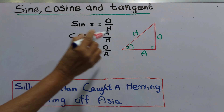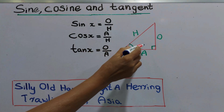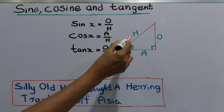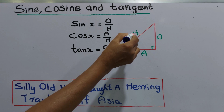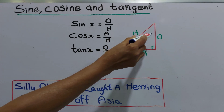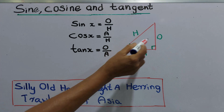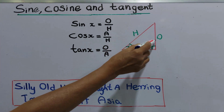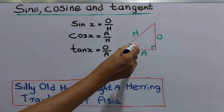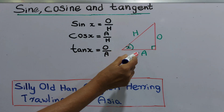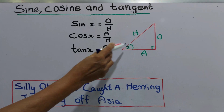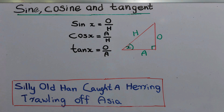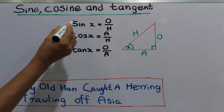In a right angle triangle, the side opposite the right angle is called the hypotenuse, as we learned in an earlier lesson. We name this as H. The side opposite the marked angle is called the opposite, and the other side is called the adjacent, as we learned in an earlier lesson.